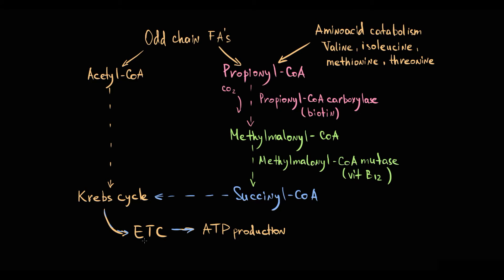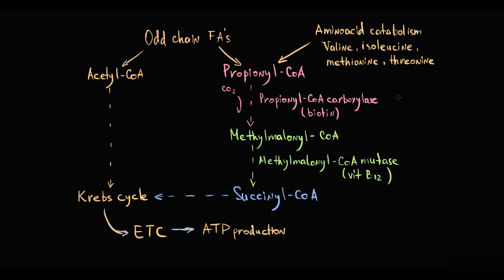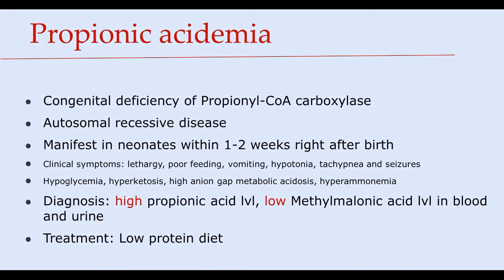There are two crucial enzymes in this pathway: propionyl-CoA carboxylase and methylmalonyl-CoA mutase. The first disorder is called propionic acidemia, also called congenital deficiency of propionyl-CoA carboxylase. It is an autosomal recessive disease.